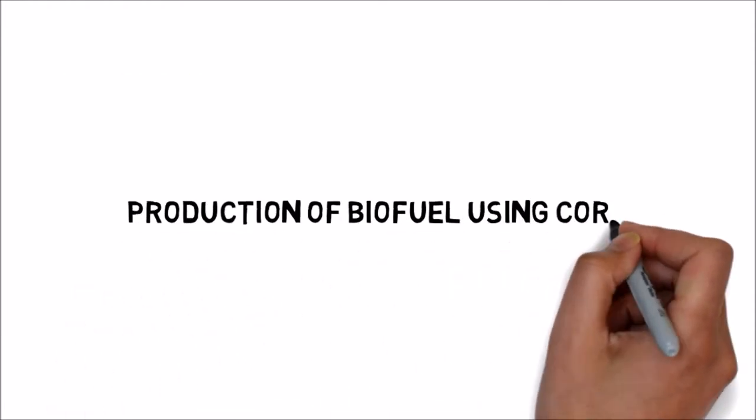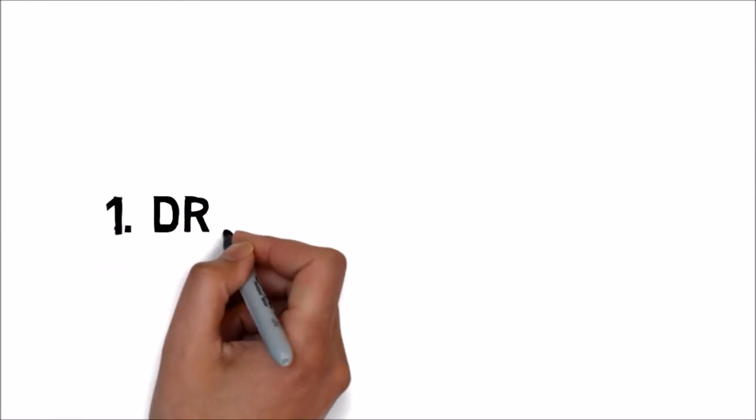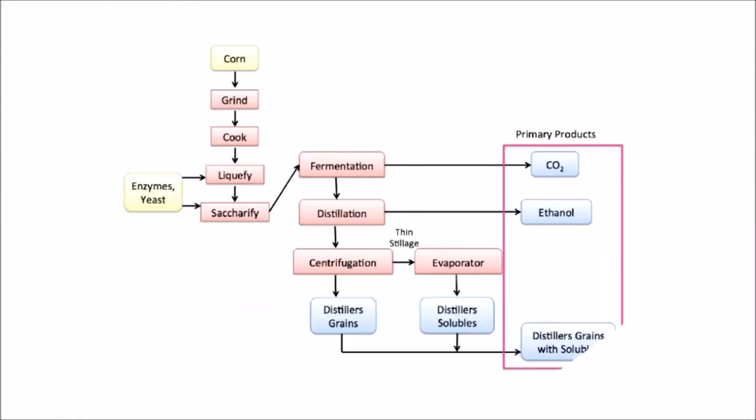Production of biofuel using corn. Dry milling process. In this process, the whole corn portion or other dull grain is first converted into flour by grounding, which is then alluded in business as feast. Now it is prepared without isolating out the different segment parts of the grain. The feast is mixed with H2O to frame a squash.